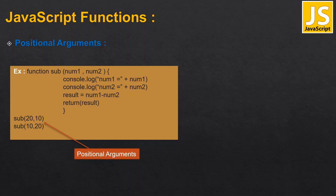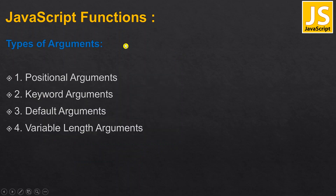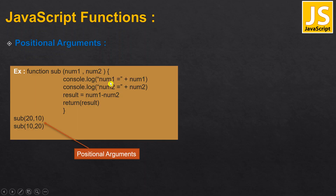Hello everyone, welcome to the TSS. In the last class we discussed how many types of arguments there are: positional arguments, keyword arguments, default arguments, and variable length arguments. Now we will discuss the first type of argument called positional argument.